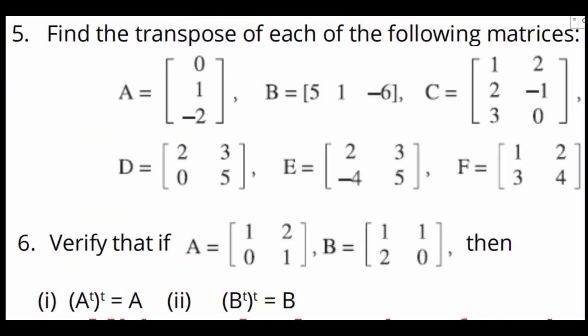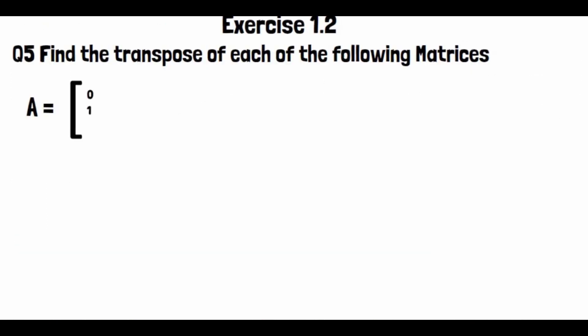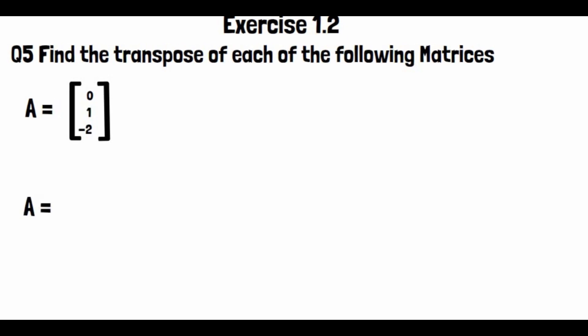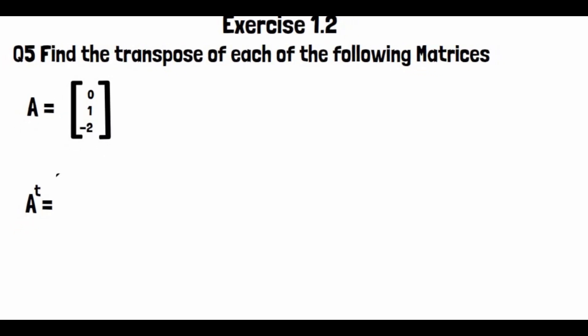Exercise 1.2, Question No. 5: Find the transpose of each of the following matrices. For matrix A equal to [0, 1, -2], to find the transpose we convert columns to rows (or rows to columns).